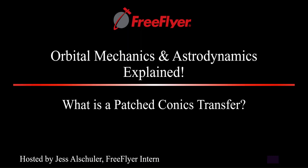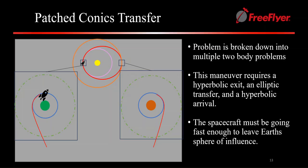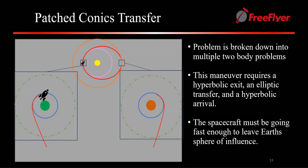Today on Orbital Mechanics and Astrodynamics Explained, we're going to be talking about a patched conics transfer. This transfer breaks the problem down into multiple two-body problems and uses a hyperbolic exit, an elliptic transfer, and a hyperbolic arrival.